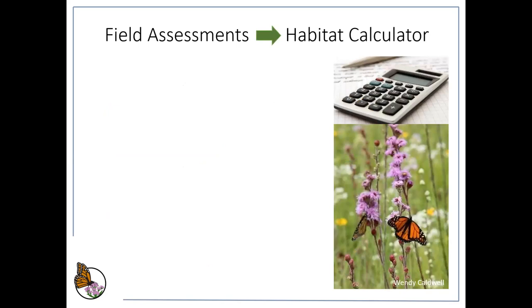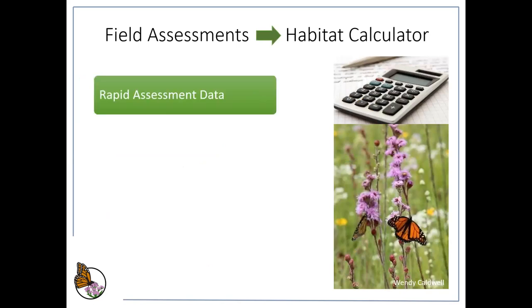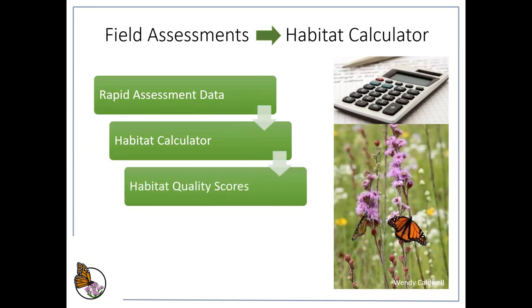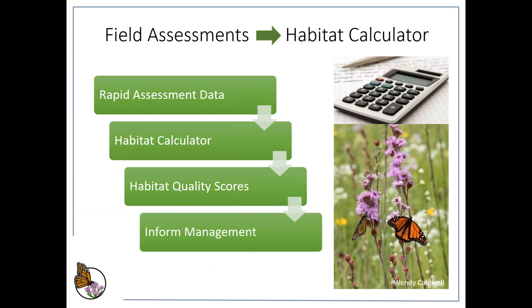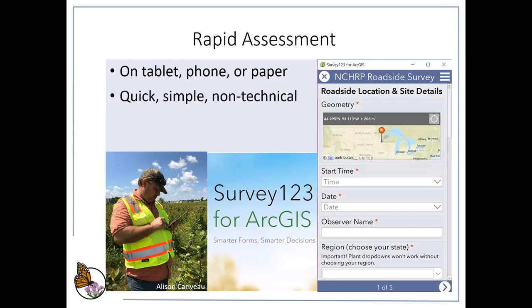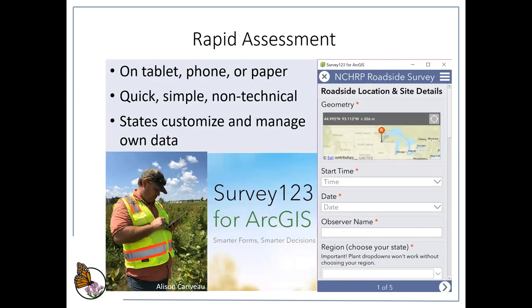Visits are made in the field and data are collected with the rapid assessment, then those data go seamlessly into a habitat calculator which produces habitat quality scores, and those can be fed back into management decisions. The rapid assessment was designed in Survey123, an Esri product familiar to many departments of transportation. It enables data entry on tablets, phones, or on paper with entry back at your desk. We've created non-technical options, and states have the ability to customize their surveys and manage their own data.